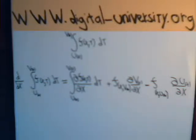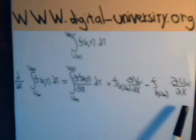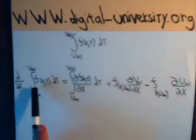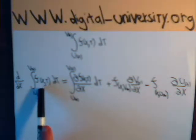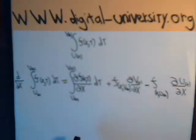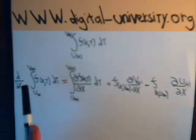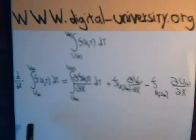In the previous video, we derived this formula for differentiating an integral. An integral where the function has more than one variable and where the limits on the integral are not constants, but they are some function. And again, this was derived in the previous video.